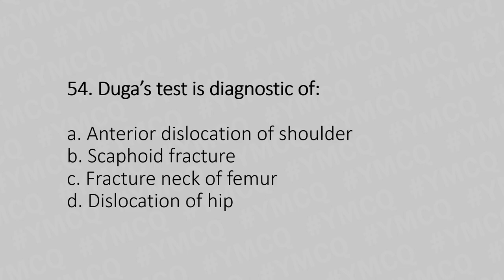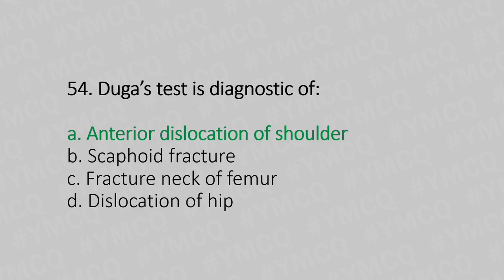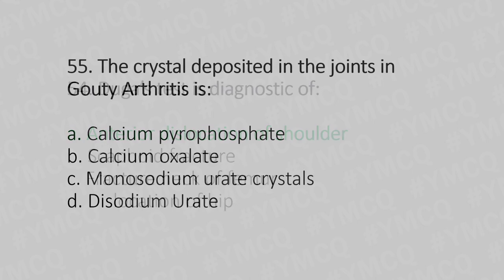Question 54: Dugas' test is diagnostic of — Option A: anterior dislocation of the shoulder, Option B: scaphoid fracture, Option C: fracture of neck of femur, Option D: dislocation of hip. The answer is Option A, anterior dislocation of the shoulder.